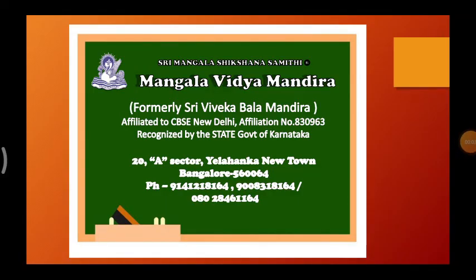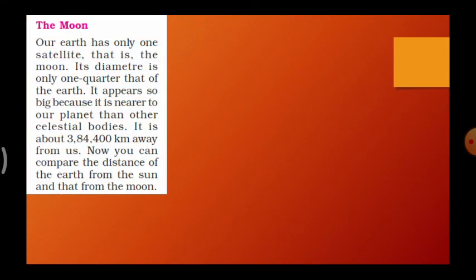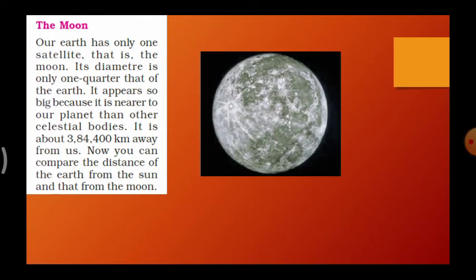Namaste students, hope you all are fine. I'm Saranya, your social teacher. Today we'll continue the lesson 'The Earth in the Solar System.' We are going to see about the Moon. Our Earth has only one satellite, that is the Moon. Its diameter is only one quarter that of Earth. The Moon appears so big because it is nearer to our planet than other celestial bodies.